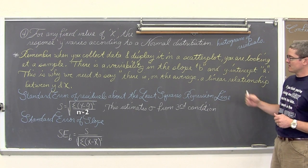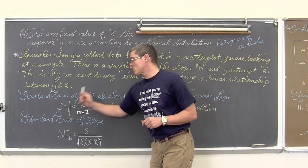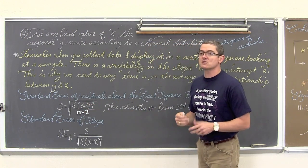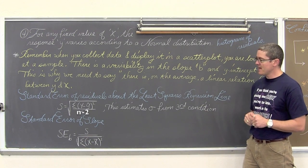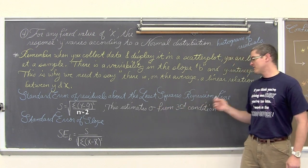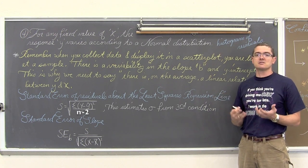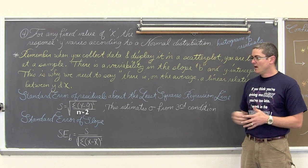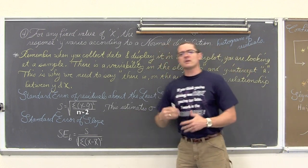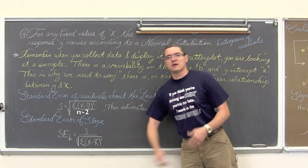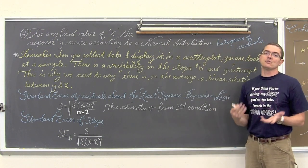The standard error of residuals about the least squares regression line — what is the standard deviation of the residuals y minus y-hat? S is equal to the square root of the summation of (y minus y-hat) squared over n, the number of points in your scatter plot. This estimates sigma from the third condition — the standard deviation of your y values along all values of x needs to be consistent through the entire regression line. Your calculator will give you this when you do a linear regression t-test.